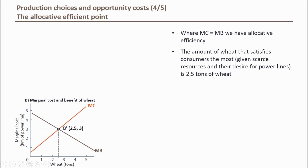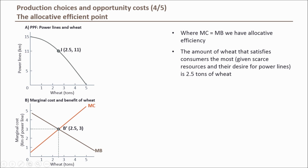Be careful — the marginal cost and benefit graph does not tell you the most preferred amount of power lines, only the amount of wheat that corresponds to the PPF. To find out how many kilometres of power lines this economy wants to produce, we need to find the combination on the PPF that corresponds to 2.5 tonnes of wheat. Figure A shows our original PPF, and the combination that corresponds to 2.5 tonnes of wheat is combination J. At point J, 11 kilometres of power lines are produced, showing the most preferred combination for this economy.